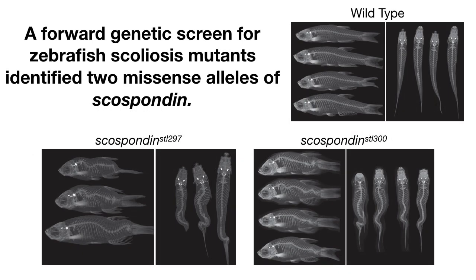This study started with a forward genetic screen for zebrafish scoliosis mutants, which identified two missense alleles of scospondin. Both alleles started to show curves during larval development, which progressed to whole body scoliosis in adults.